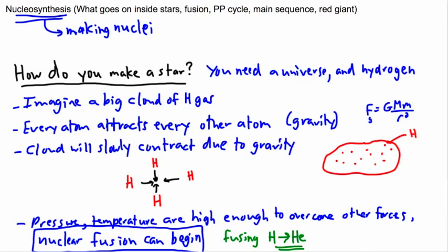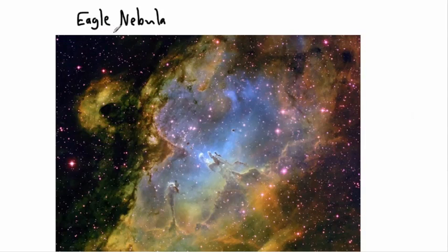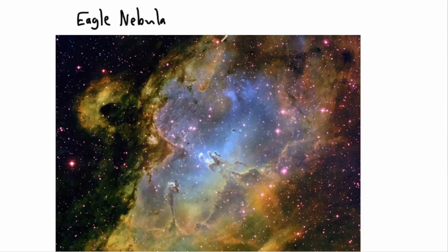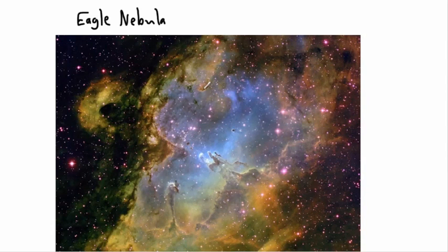Let's look at some pictures. This is a picture of the Eagle Nebula. These clouds of hydrogen gas — you can see the pretty colors — there's lots of it in outer space. Light or energy can hit these clouds and they give off light, so they radiate. This gas is considered a hot gas because of that — it emits light and makes very pretty colors.